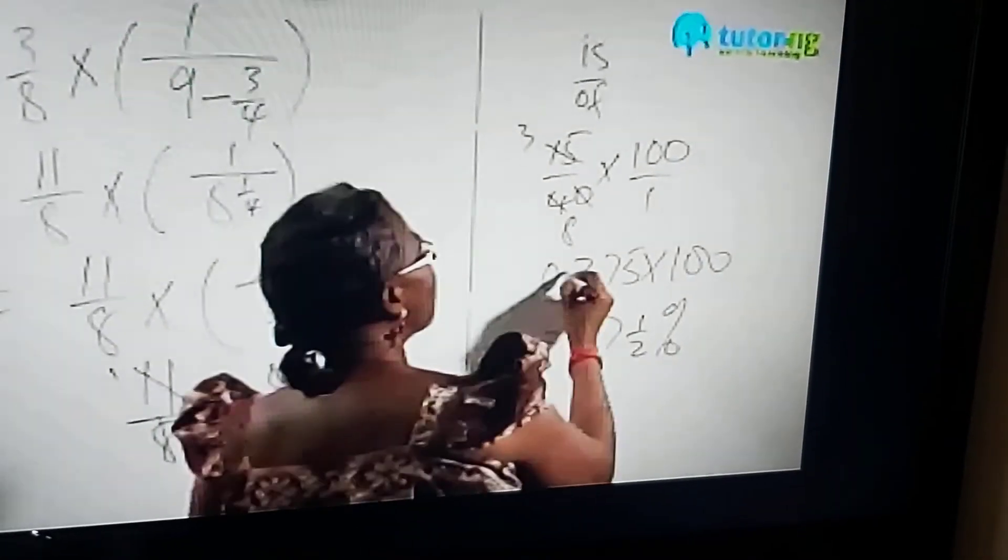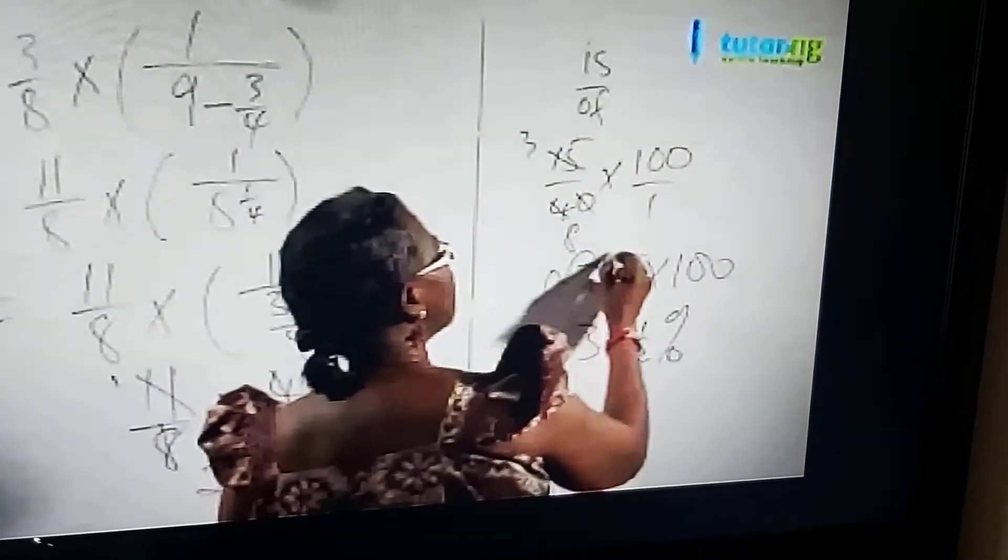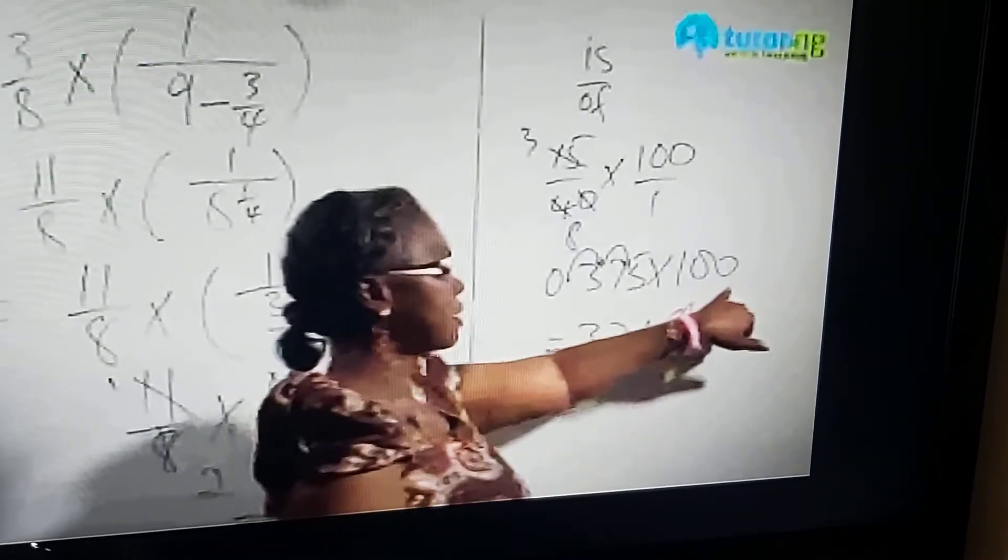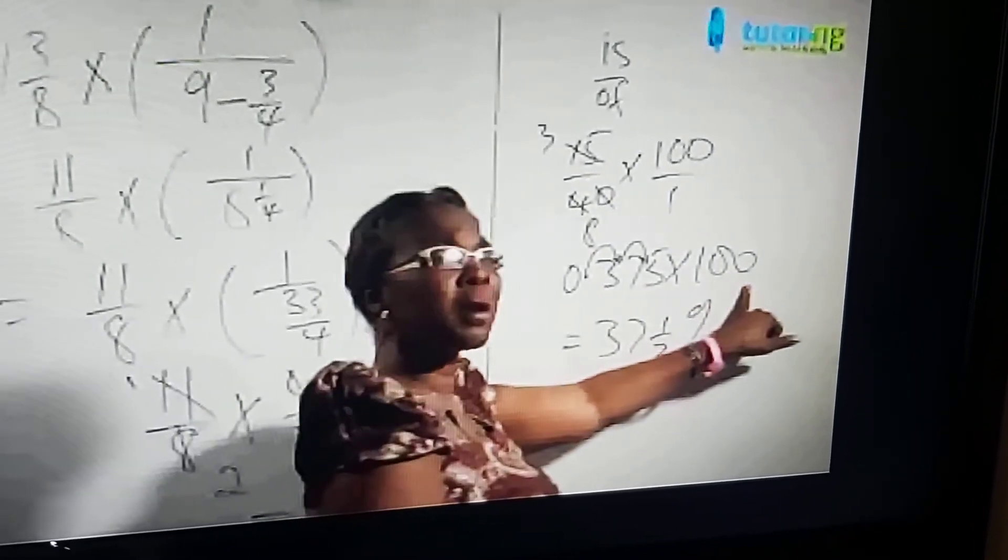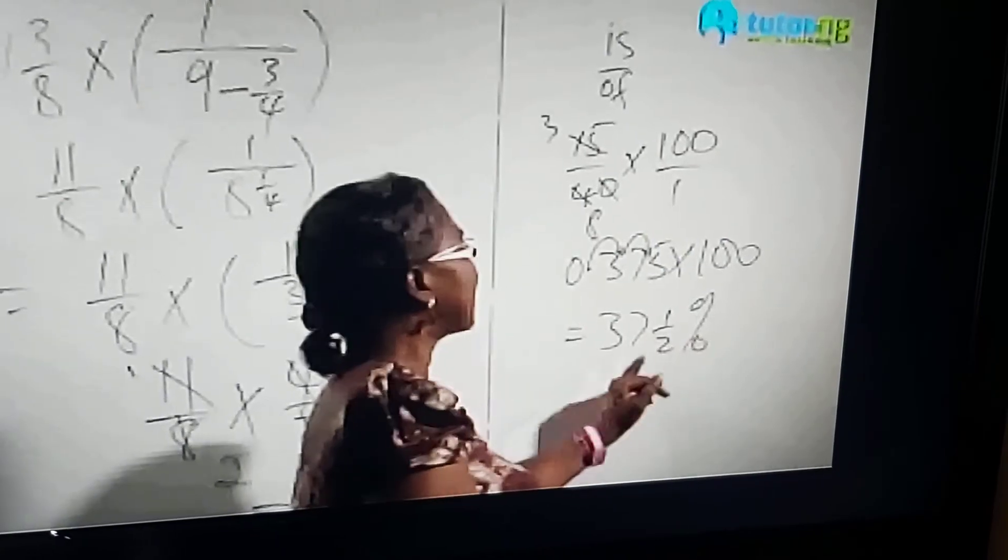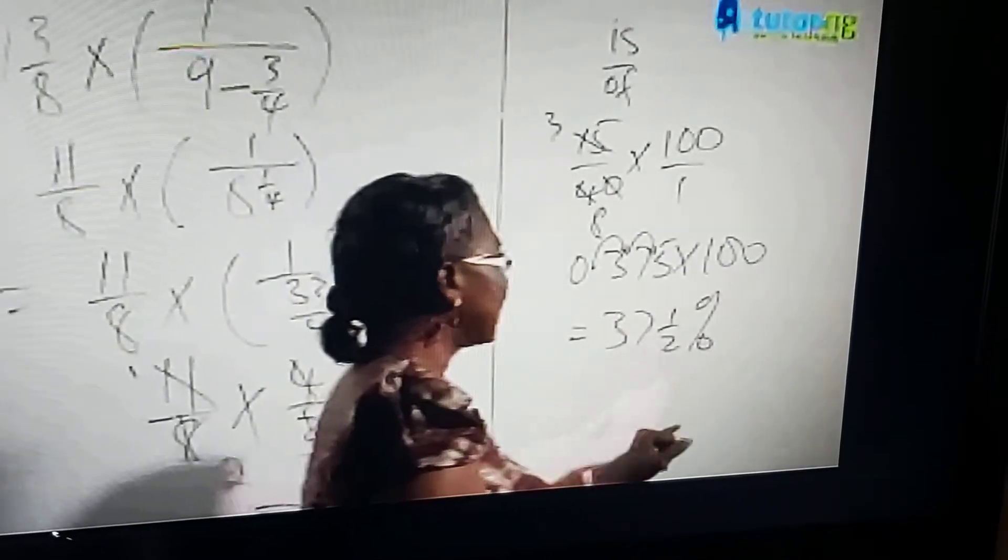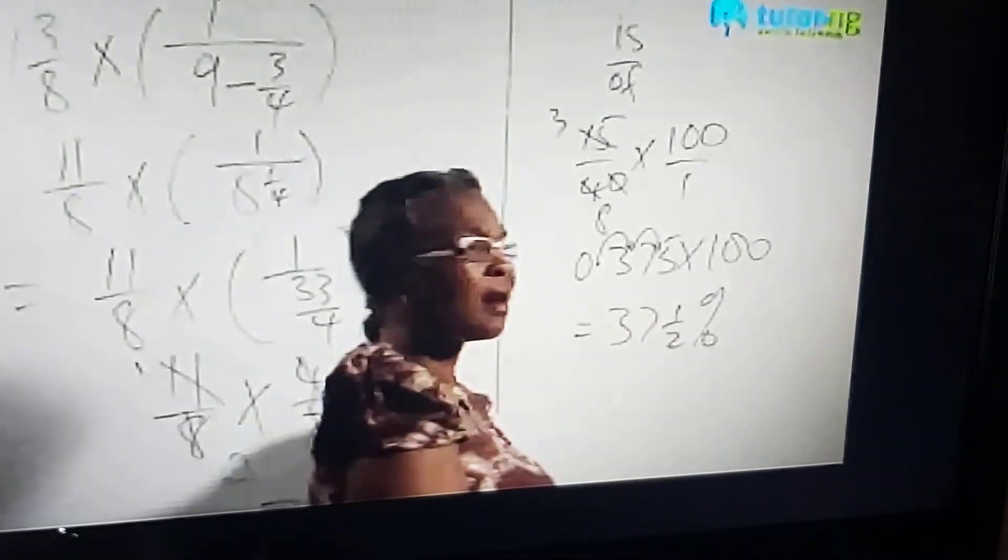So we move the decimal two places. We are multiplying by 2 powers of 10, which is 100. And so you get 37.5%.